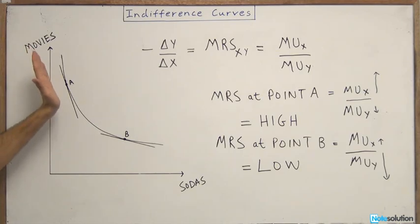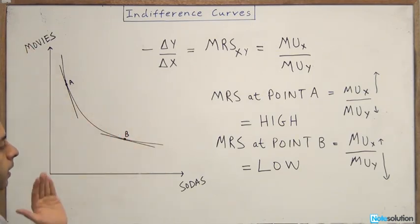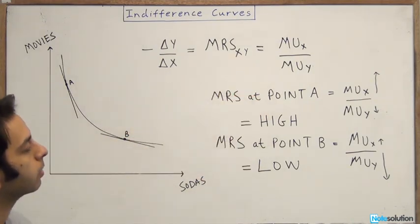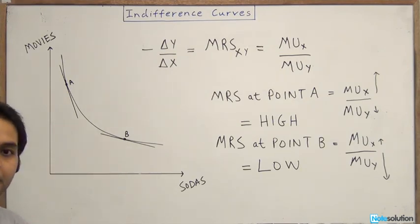So this goes to show that as we move down the indifference curve, or as we increase sodas and reduce movies, the marginal rate of substitution, X for Y, or sodas for movies, goes down.